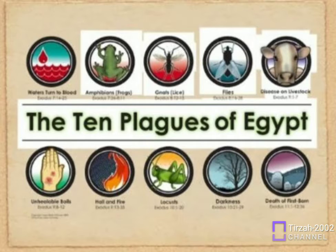Frogs — Frogs cover the land. The result: Pharaoh's magicians also make frogs appear. Exodus 8:1-15. Plague 3.